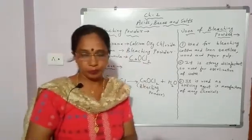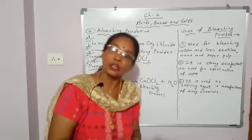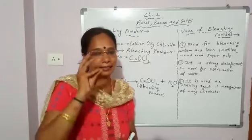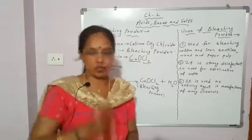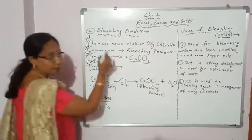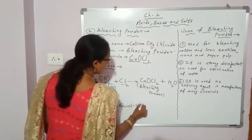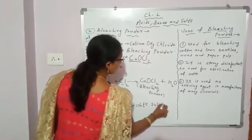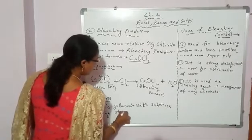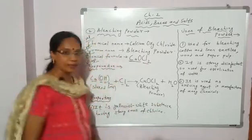Properties of bleaching powder. In appearance it is a yellowish white substance having a strong smell of chlorine. This is one of the properties we discussed today.